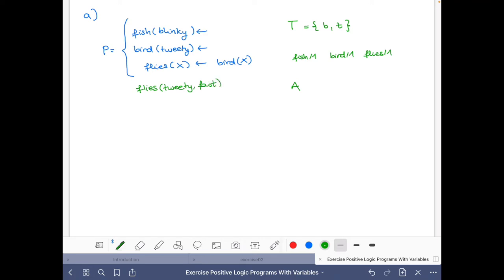Right? So then this predicate flies is different than this one here. And this would be the predicate flies with two arguments. This is just to show you why we have to give also the arity to identify a predicate.